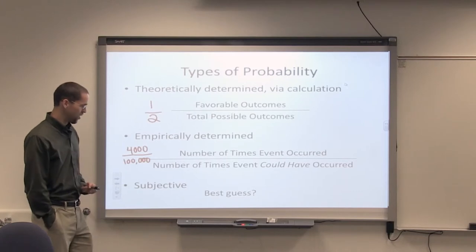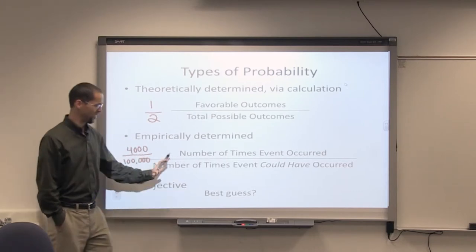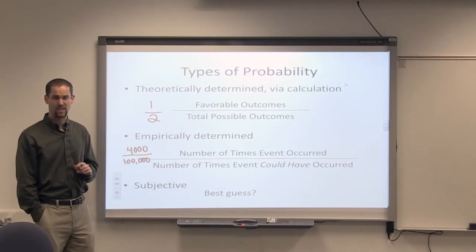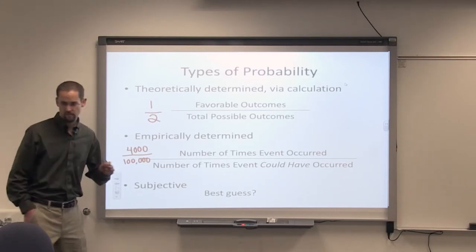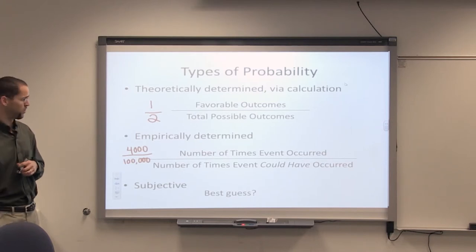And subjective, we'll just call that a best guess. There's not a great way of calculating or counting things that are happening or could have happened. So those are three types of probabilities.